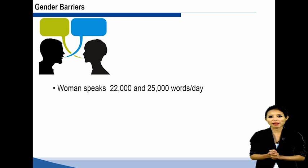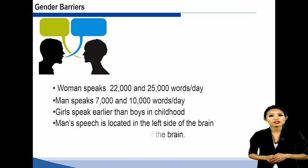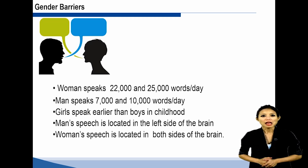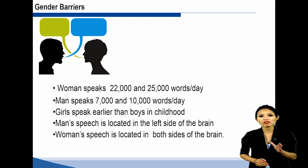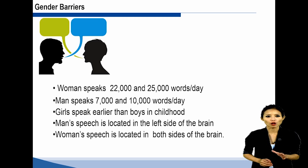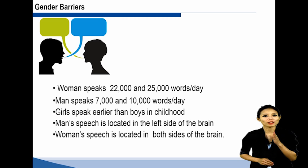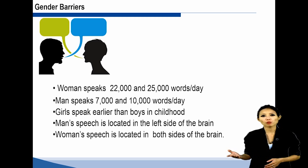Gender barriers: There are distinct differences between the speech patterns of a man and a woman. A woman speaks between 22,000 and 25,000 words a day whereas a man speaks between 7,000 and 10,000 words a day. In childhood, girls speak earlier than boys and at age three have a vocabulary twice that of boys. The reason lies in the wiring of the brain. When a man talks, speech is located in the left side of the brain with no specific area. When a woman talks, speech is located in both hemispheres and in two specific locations. This means a man talks in a linear, logical, and compartmentalized way, whereas a woman talks more freely, mixing logic and emotion.